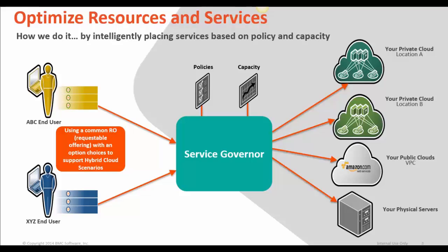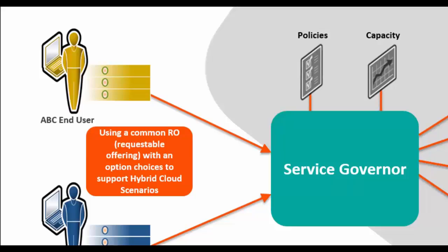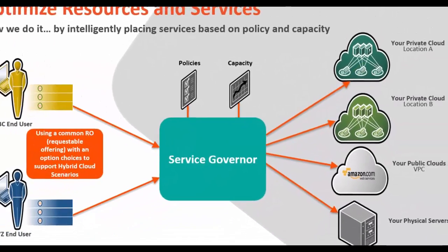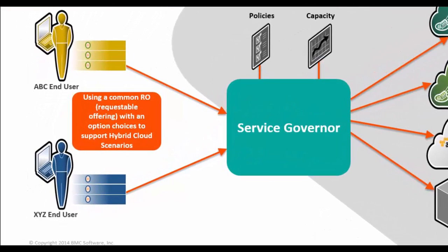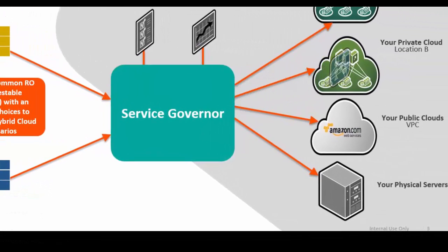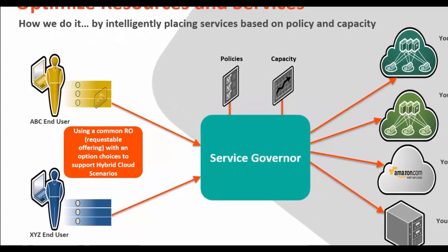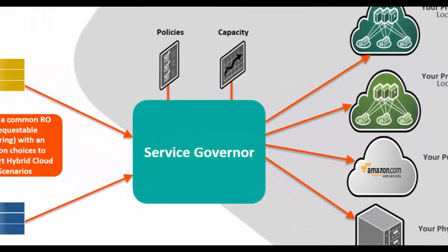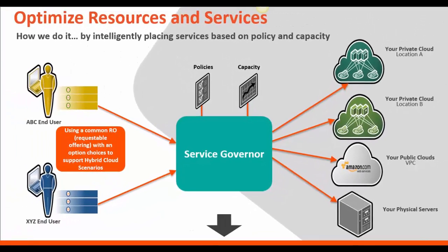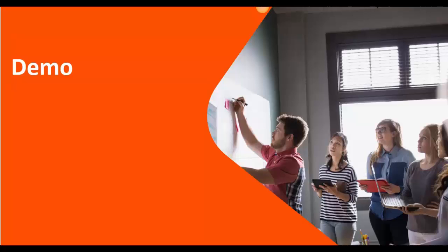There are three scenarios. In the first, user ABC uses the common requestable offering, chooses private cloud, and submits a request. Service Governor places it in private cloud location A based on policy and capacity. In the second, user XYZ does the same and is placed in location B. In the third scenario, user ABC chooses public cloud, and Service Governor places that request in public cloud. Let's take a look at the detailed configuration on the cloud portal.